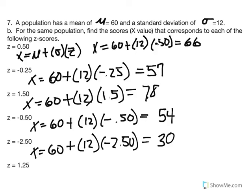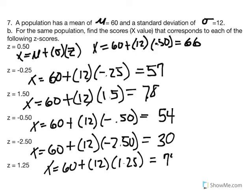For part F, x equals 60 plus 12 times 1.25. We're looking for the x-value that's one and a quarter standard deviation units above the mean. 12 times 1.25 plus 60 gives us a score of 75. The score of 75 is one and a quarter standard deviation units above the mean, so the z-score is 1.25.